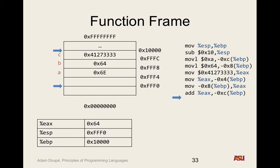In later versions of C you can declare variables anywhere, but by looking at the code the compiler can see all the local variables in that scope and their types, so it knows exactly the size it needs to store them. This can all be done at compile time.